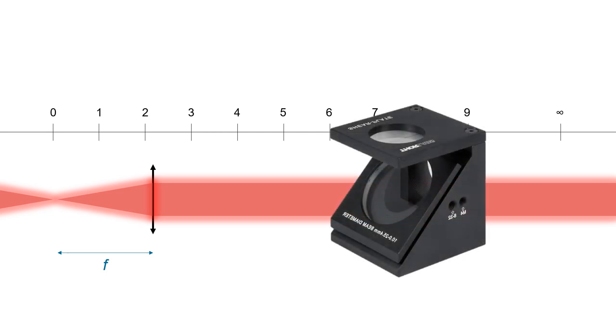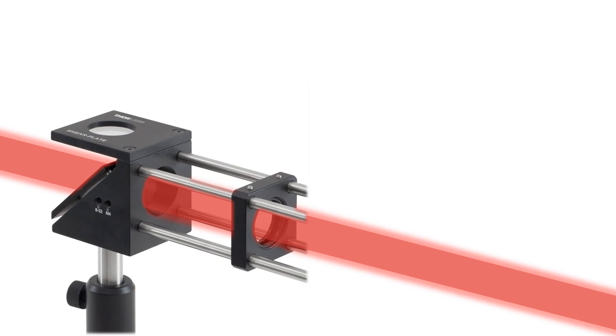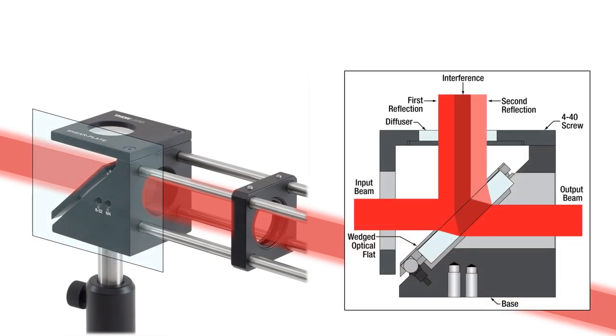For checking the collimation state of a laser beam is a shearing interferometer. The shear plate inside the interferometer has a slight wedge in a certain thickness which produces two slightly displaced reflected beamlets that can inform on the collimation state of a laser beam very accurately.